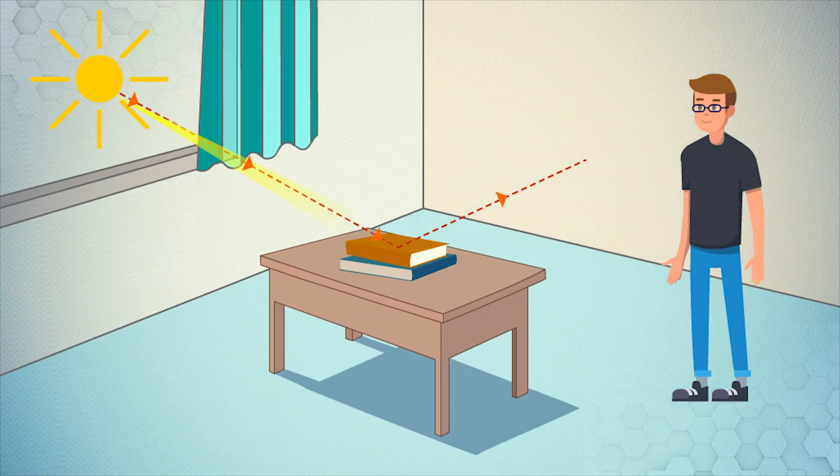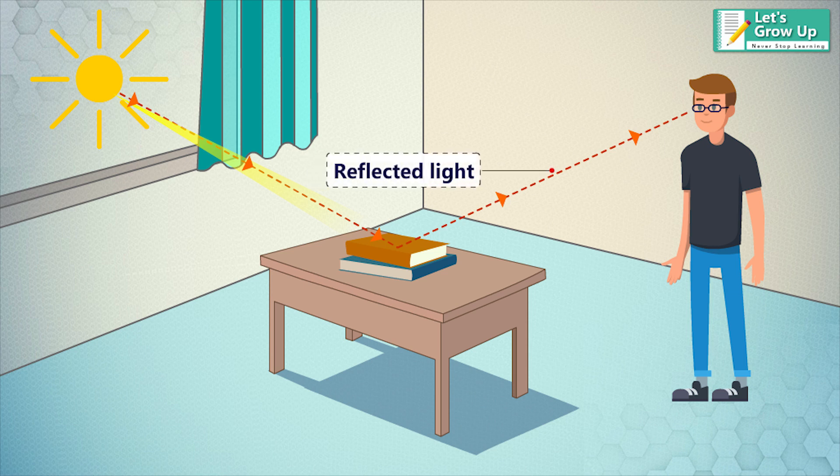The sunlight helps us to see objects. An object reflects light that falls on it. This reflected light, when received by our eyes, enables us to see things.